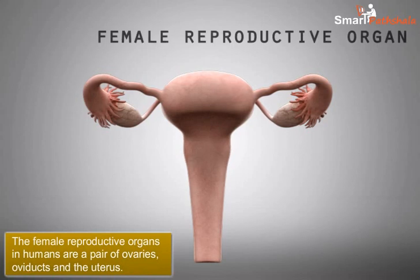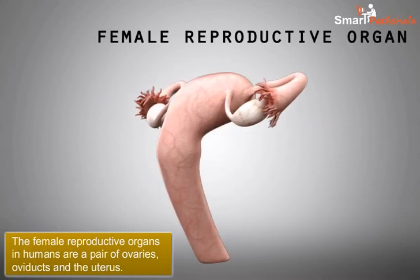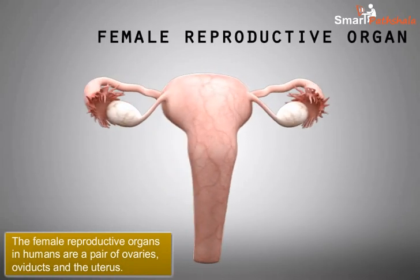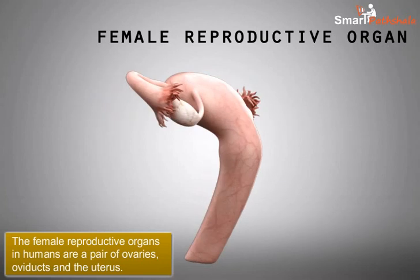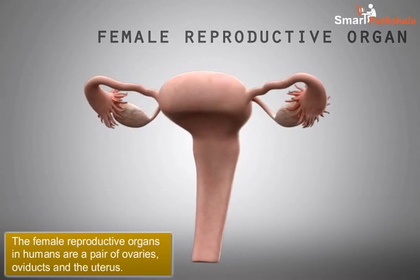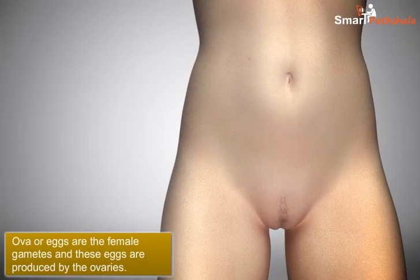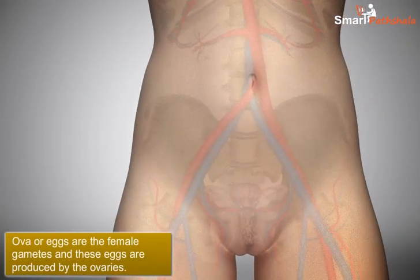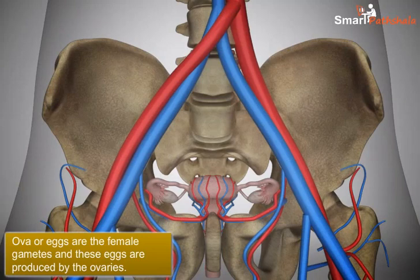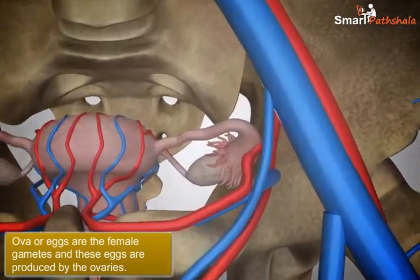The female reproductive organs in humans are a pair of ovaries, oviducts, and the uterus. Oviducts are also called fallopian tubes. Ova or eggs are the female gametes and these eggs are produced by the ovaries.